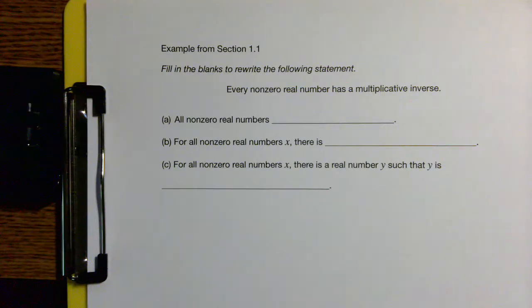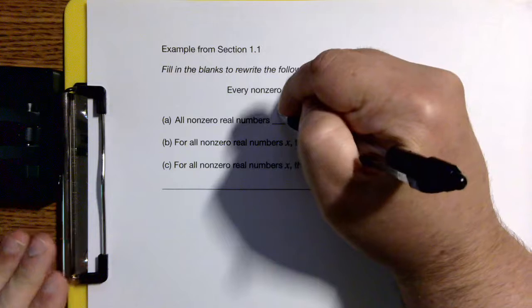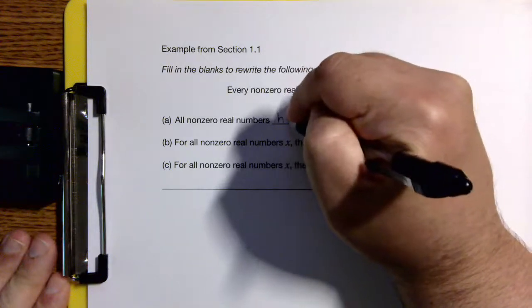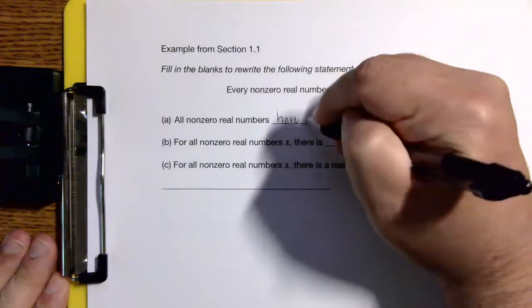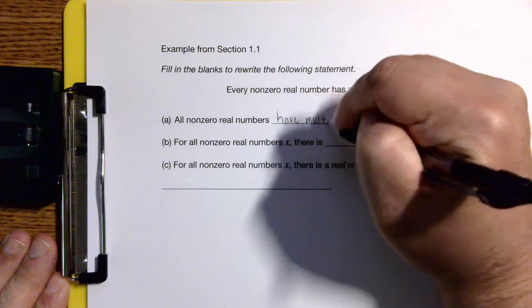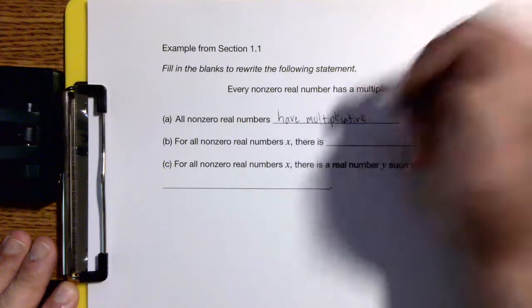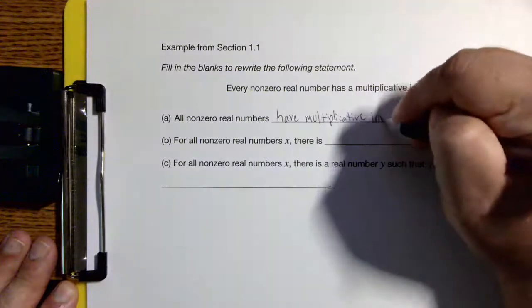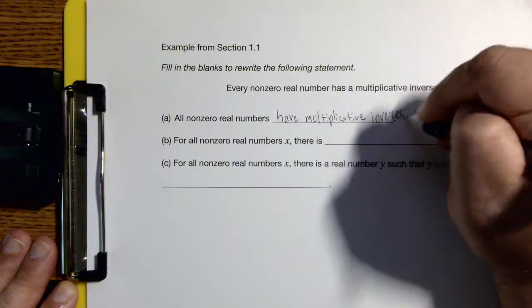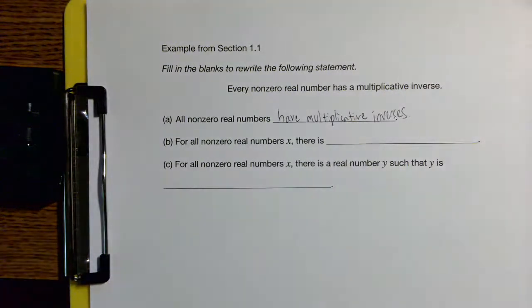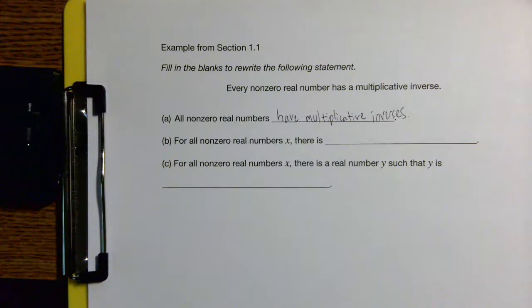So, 'Every non-zero real number has a multiplicative inverse' — we could say 'All non-zero real numbers have multiplicative inverses.' That would have the same meaning as the original statement.